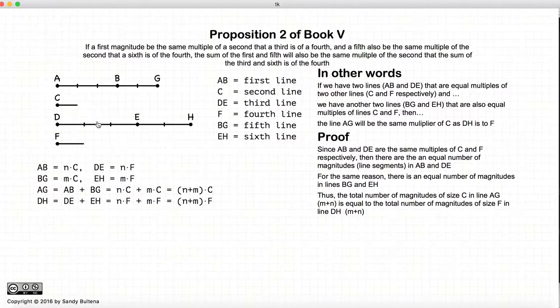This segment corresponds to this, this one to here, this one to here, and so on and so forth. And if there's a one-to-one correspondence of these segments, then the number of segments will be equal between AG and DH. And that is essentially the proof of this proposition.